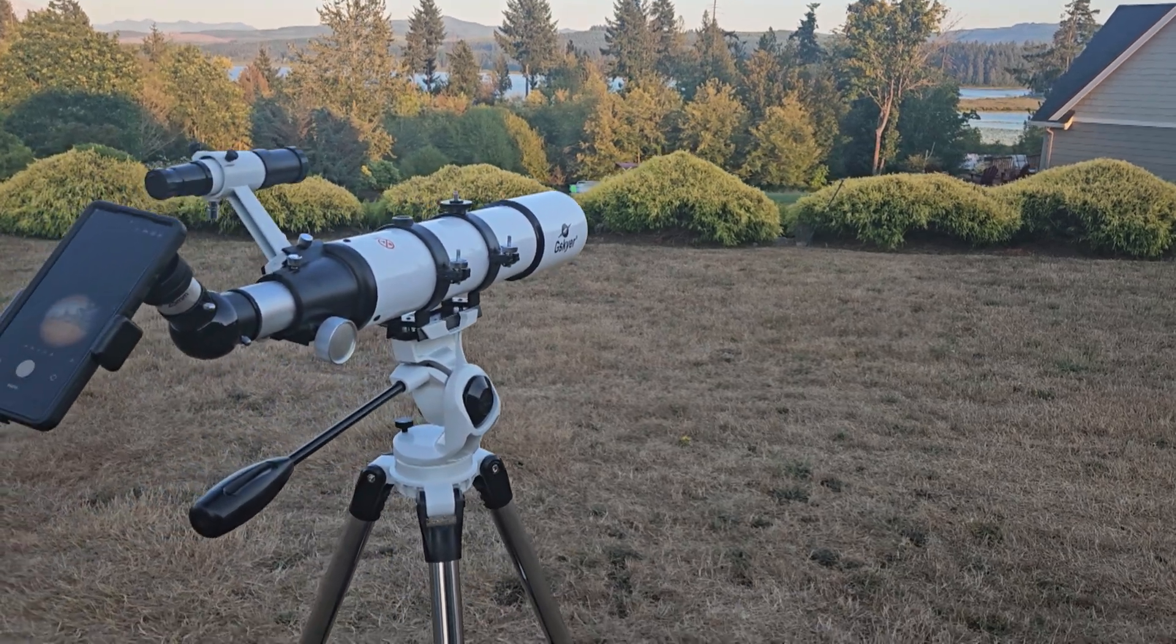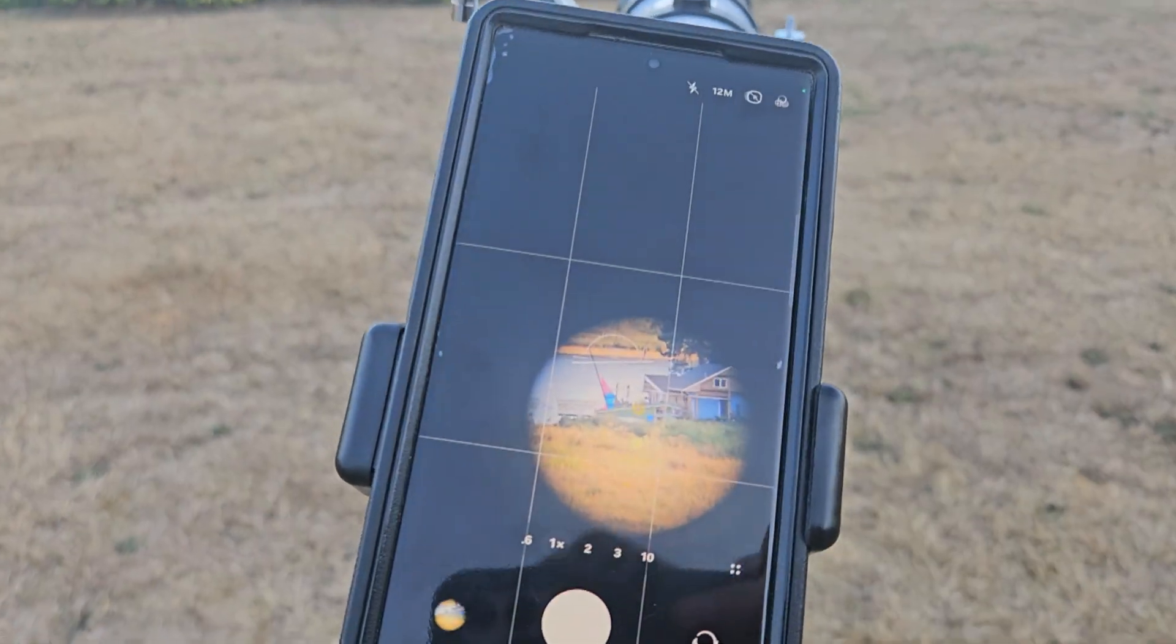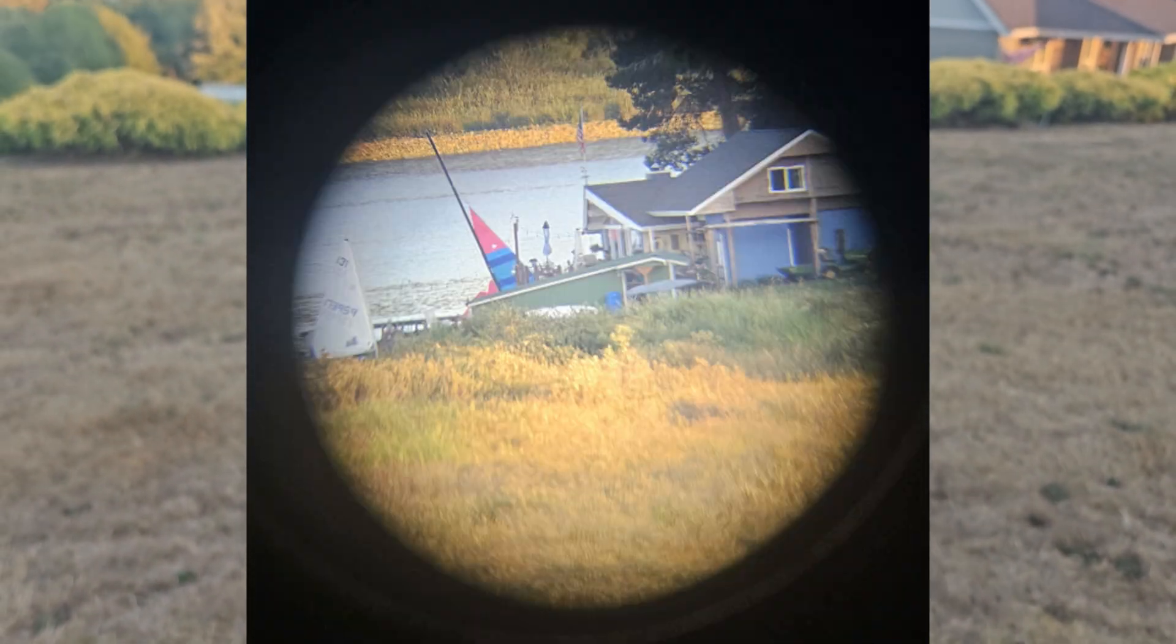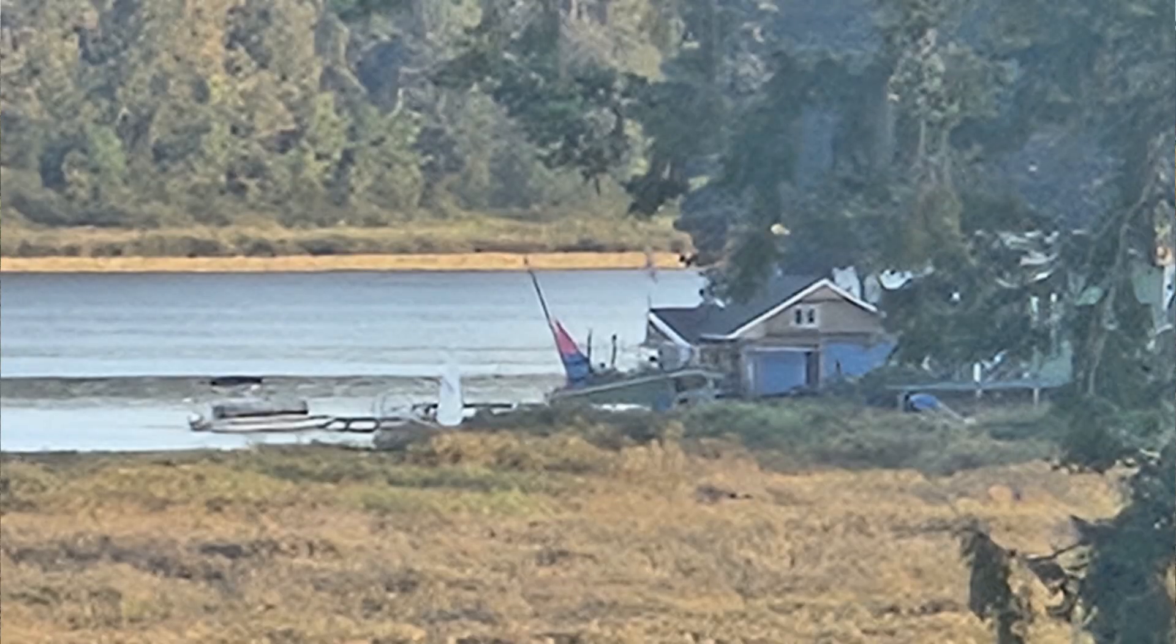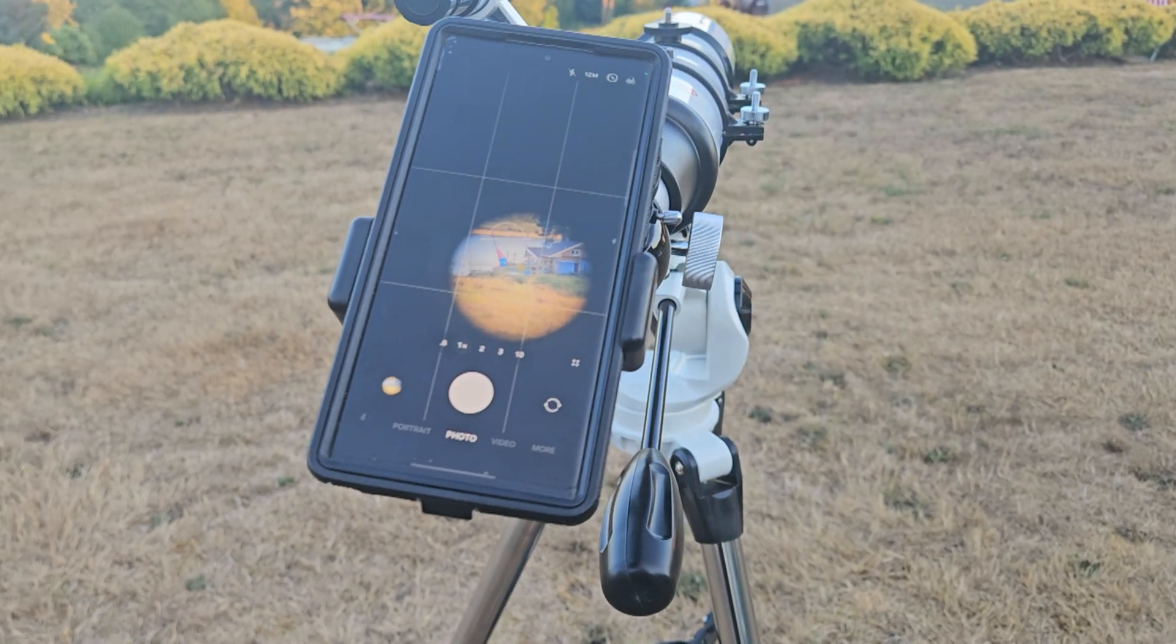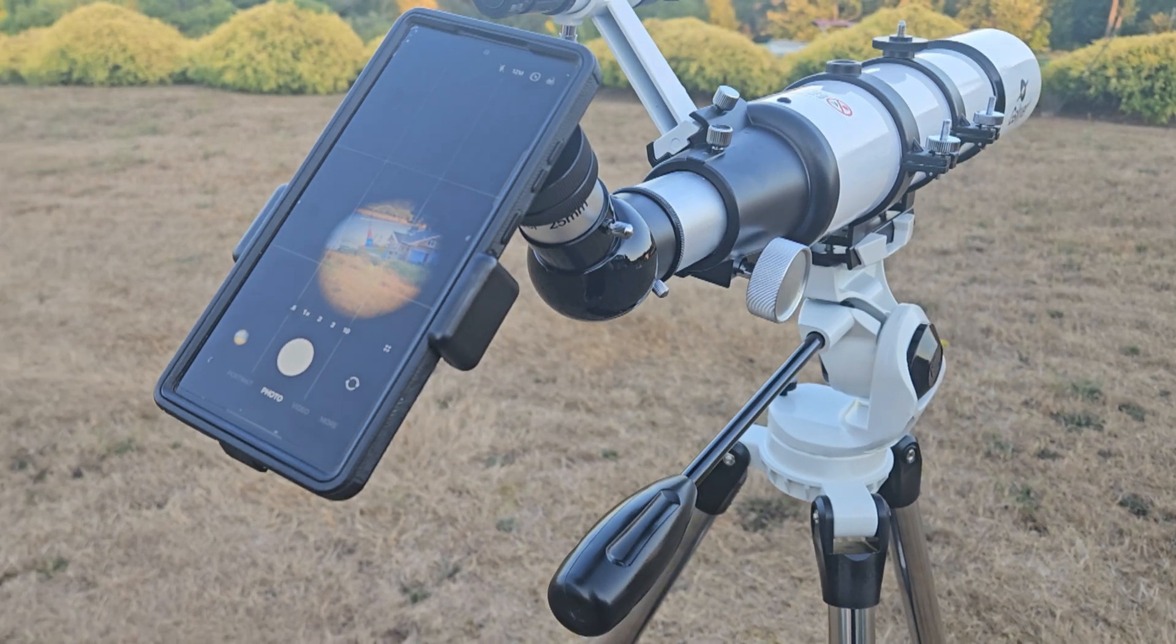Alrighty guys, and here's the scope set up in my backyard. Looking at the nearby island in Silver Lake out there. As you can see, pretty nice detail. This is using the 25mm eyepiece. And here's a comparison shot taken with my wife's Samsung Galaxy S23 at 30x. As you can see, there's quite a bit more detail taken through the telescope, although there is a narrower field of view.